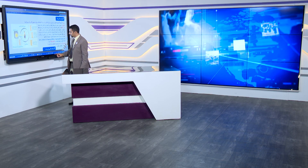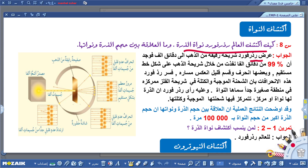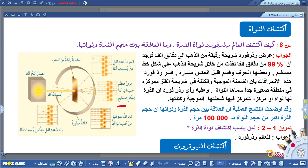عرض رذرفورد شريحة رقيقة من الذهب إلى جسيمات ألفا، فوجد أن 99% من جسيمات ألفا قد نفذت من خلال الشريحة على شكل خط مستقيم، وانحرف بعضها، وانعكس قسم قليل عن مساره. فسّر رذرفورد هذه الانحرافات بأن الشحنة الموجبة والكتلة في الشريحة المعدنية ممركزة في منطقة صغيرة جداً أسماها النواة.